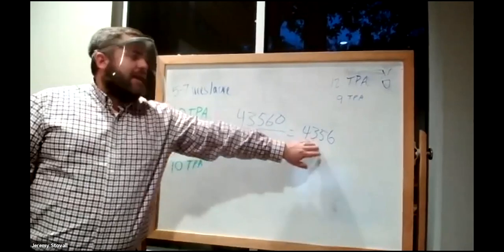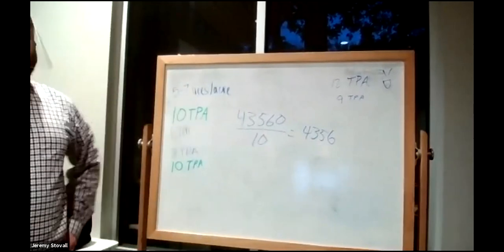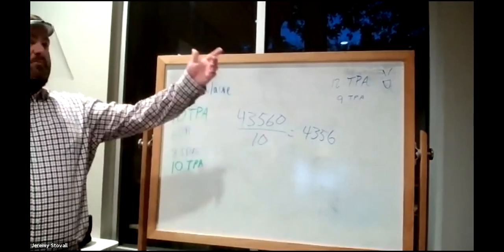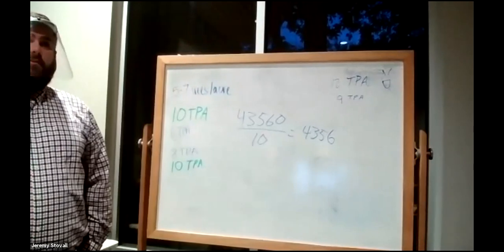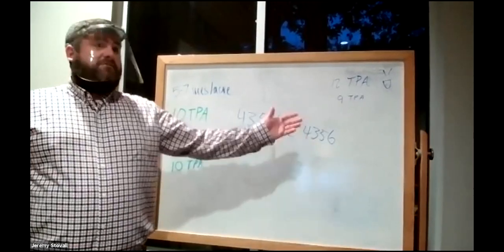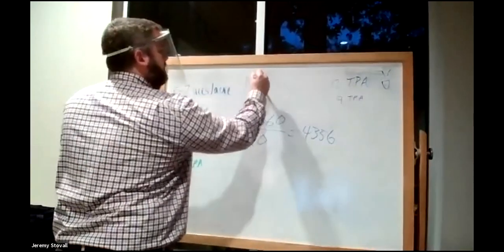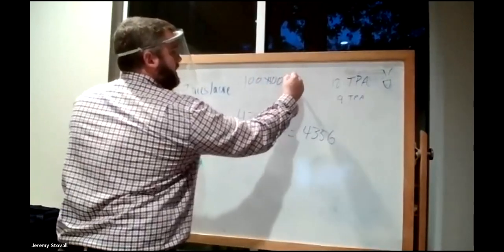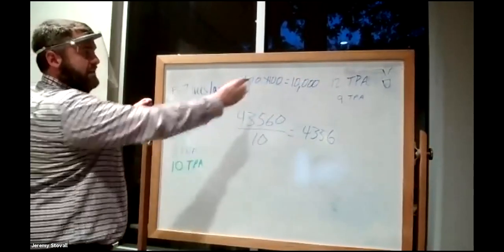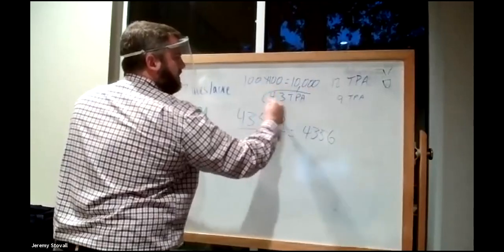How might you space those trees out? If you put them on a 100 by 100 foot spacing, 100 times 100 is 10,000 square feet per tree. We know there are 43,560 square feet per acre, so that gives you approximately 4.3 trees per acre — which would actually be a little bit lower than any of you came up with.